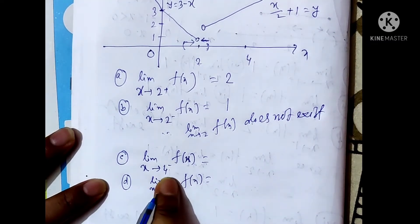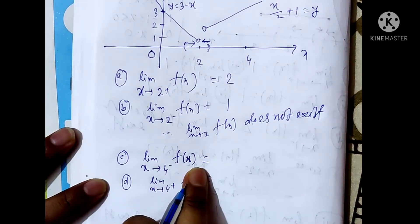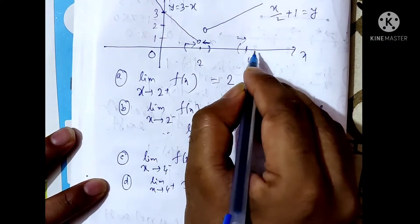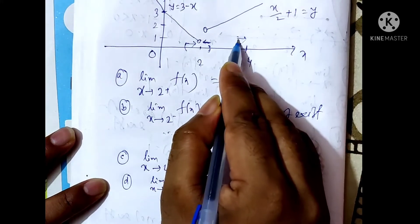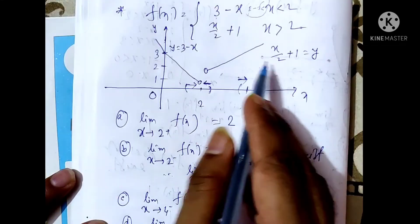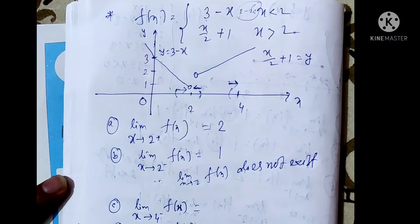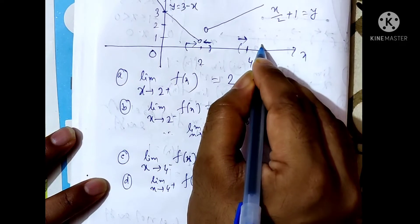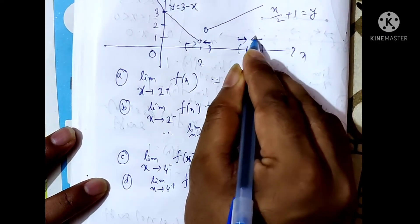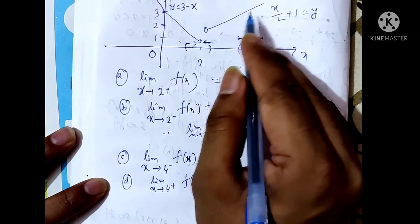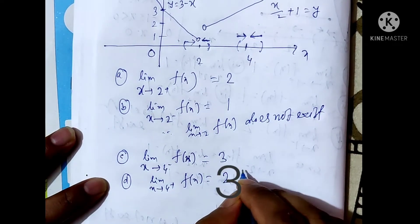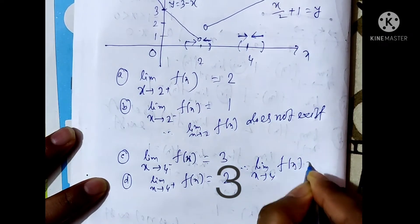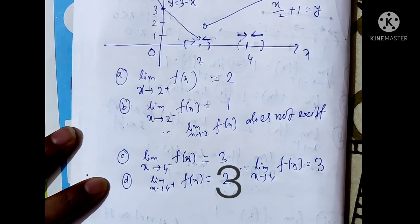Now find the limit as x tends to 4⁻ of f(x). Approaching from the left at x = 4, the function is x/2 + 1, giving 4/2 + 1 = 3. For the limit as x tends to 4⁺ of f(x), approaching from the right, the function is also x/2 + 1, giving 3. Therefore, the limit as x tends to 4 of f(x) exists and equals 3.